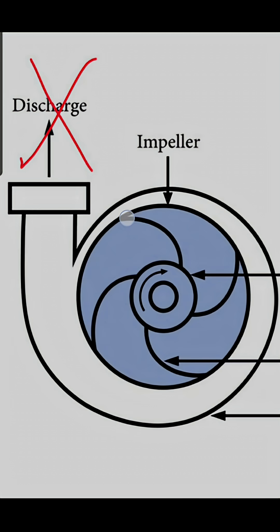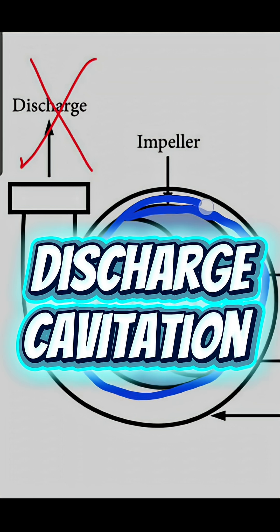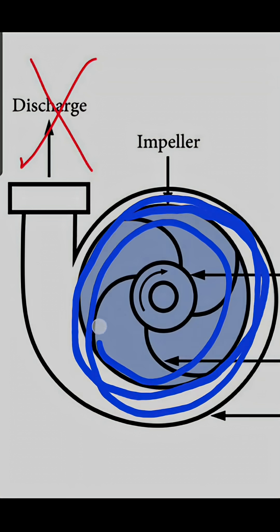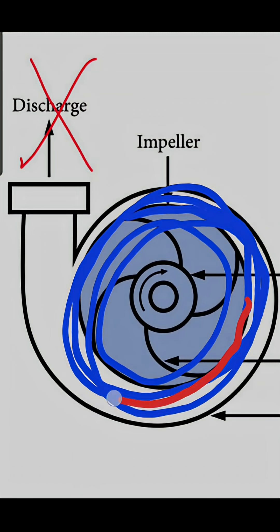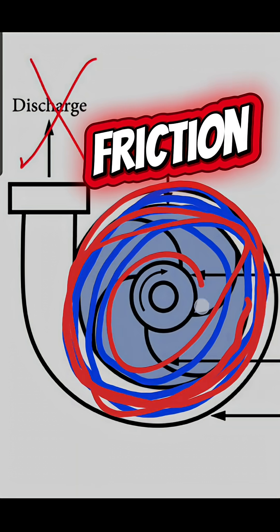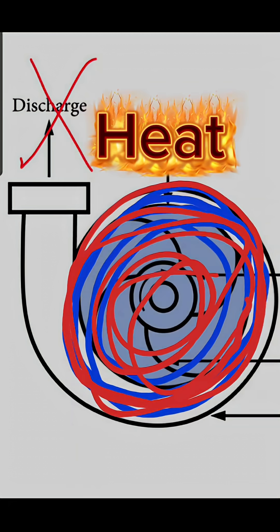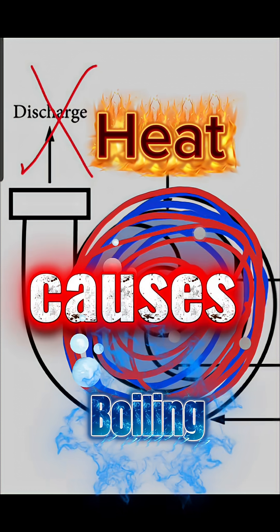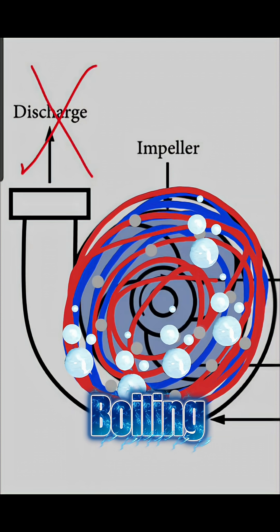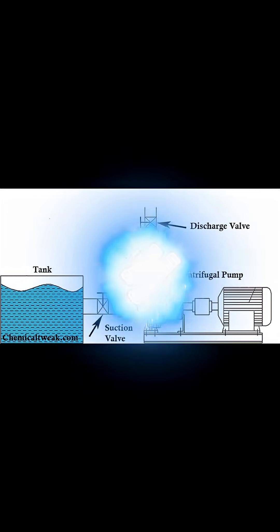Well, it depends on if it's suction cavitation or discharge cavitation. With discharge cavitation, if flow through your pump is restricted due to something happening downstream or the discharge head pressure is too high, the liquid is stuck inside the pump casing while the impeller spins thousands of RPMs. This causes friction. Friction equals heat. Heat causes boiling. So the vapor bubbles are actually boiled, processed liquid. The lack of flow causes friction, which causes the liquid to boil and results in cavitation.